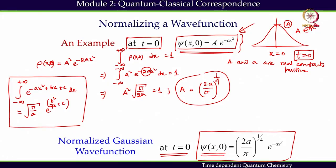I would like to emphasize one more point: it is interesting to observe that this function we have been able to normalize, but it is not necessary that all functions can be normalized. One important requirement of quantum mechanics is that only those functions which can be normalized are acceptable in quantum mechanics.